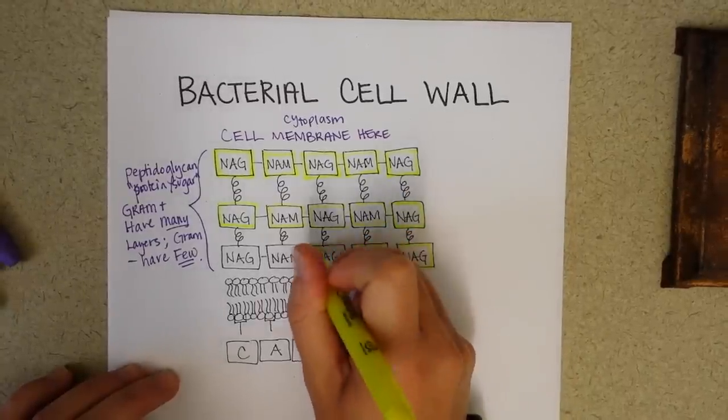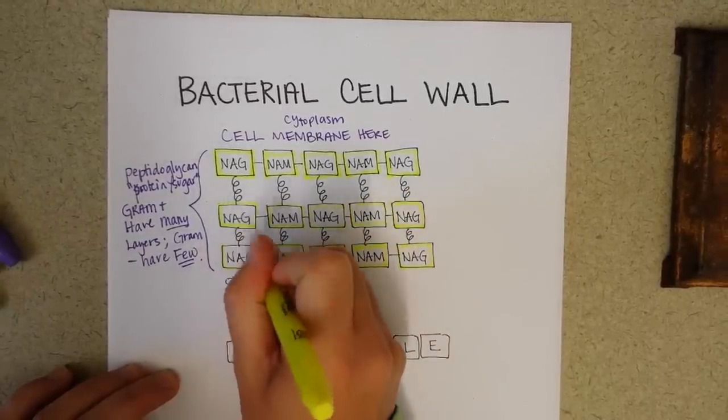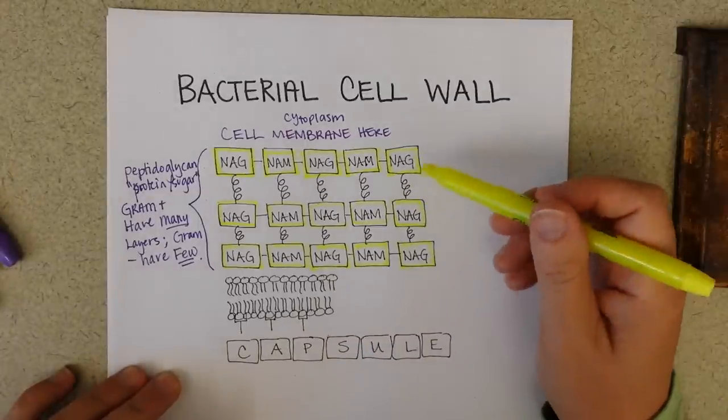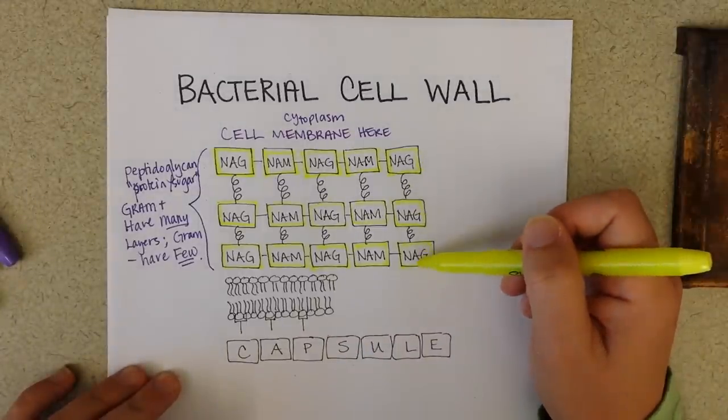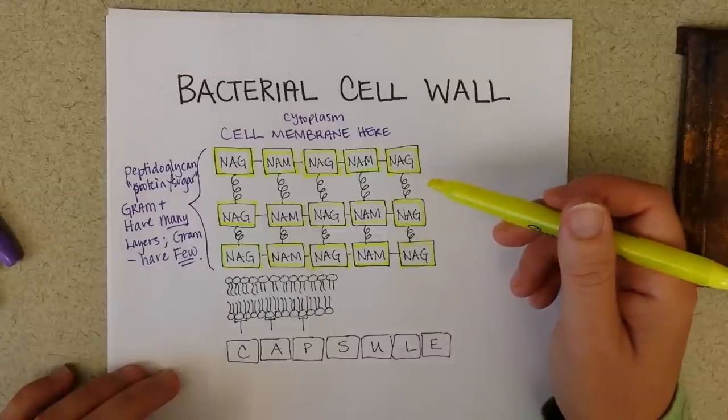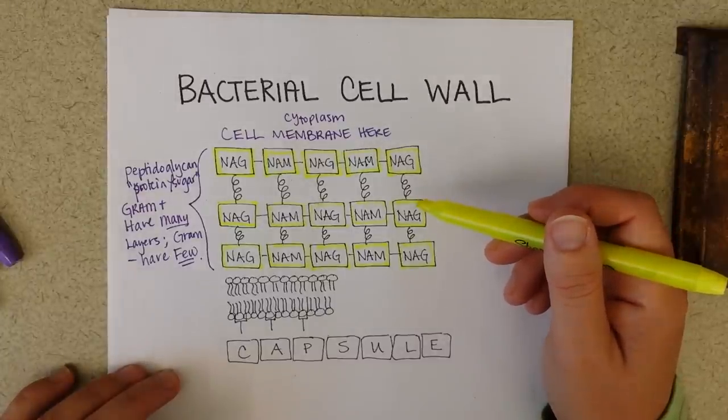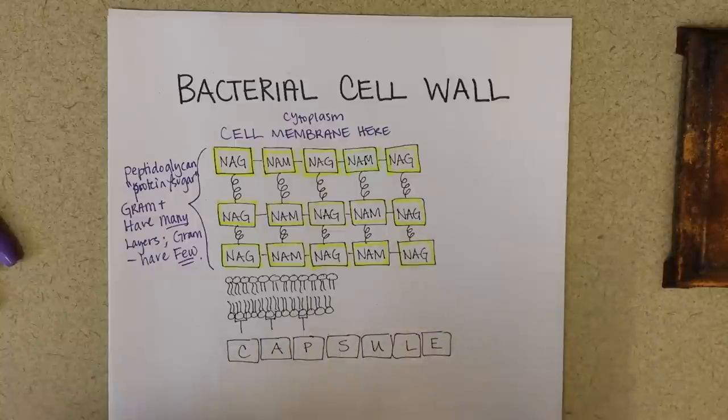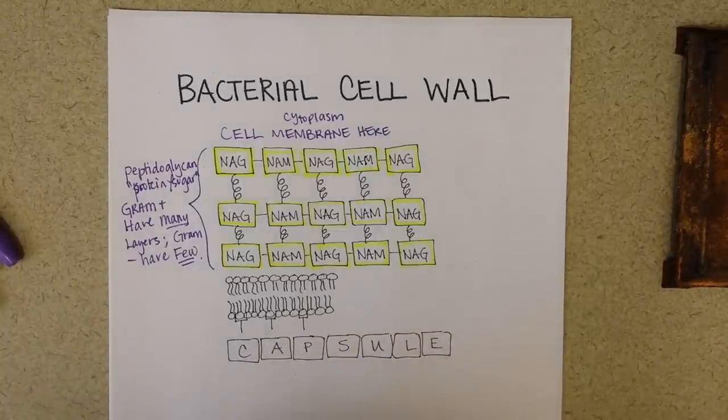And so in this very schematic picture, you can see that there are three layers in the peptidoglycan wall. There might be as many as 30 in a gram-positive bacterial cell wall and then far fewer than that in gram-negative. It really just depends.